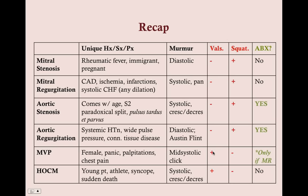With mitral valve prolapse: often seen in females presenting with panic, palpitations, and pain. Murmur is a mid-systolic click, worsens with Valsalva. Antibiotics only if the patient also has a concurrent regurgitant systolic murmur. With HOCM: young athlete presenting with syncope or sudden death. Murmur is systolic crescendo-decrescendo like aortic stenosis, but caused by septal hypertrophy rather than a valve problem. No antibiotics needed for HOCM.